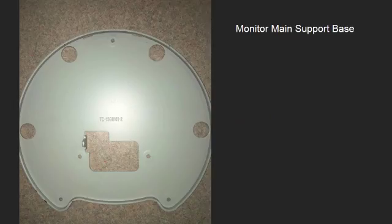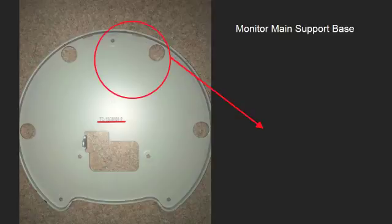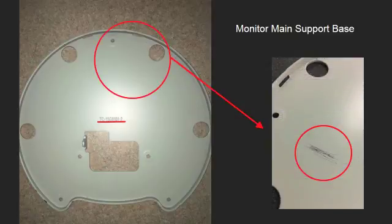I will now go over metal casting and cutting processes. This is the main monitor support base. This was made by investment casting as evidenced by the production number. Investment casting is good for making intricate part shapes with excellent surface finish and accuracy. The part was then electroplated as shown by the scratch marks we made which reveal the original metal.